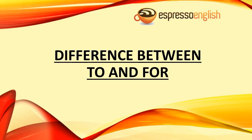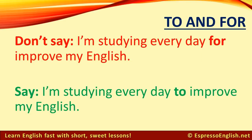Difference between 'to' and 'for' from Espressoenglish.net. Don't say, 'I'm studying every day for improve my English.' The correct sentence is, 'I'm studying every day to improve my English.' It can be difficult to know when to use 'to' and when to use 'for,' so I'm going to give you some examples in this lesson.